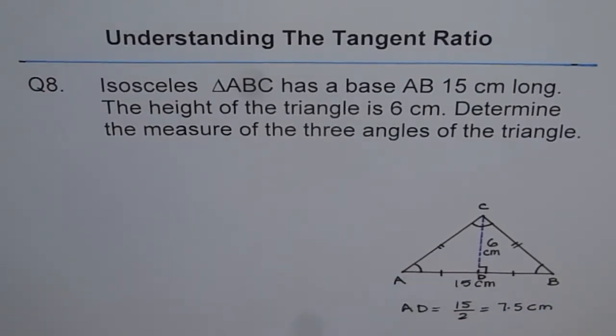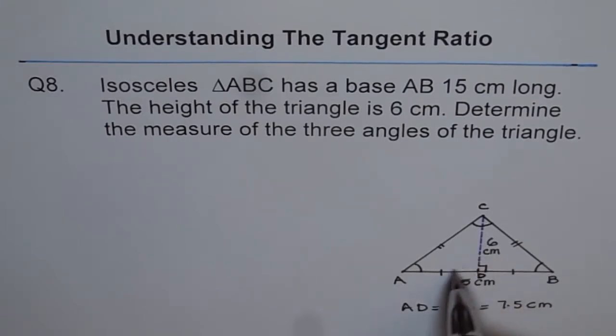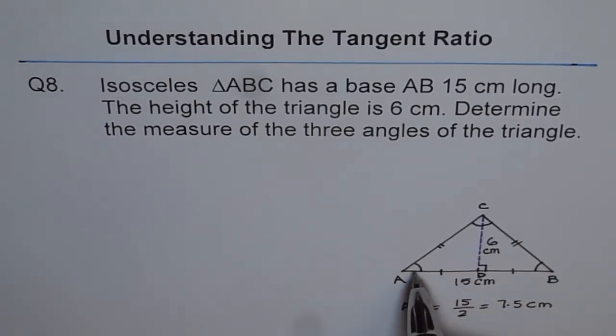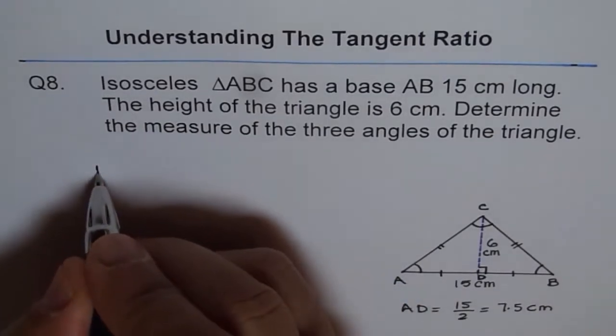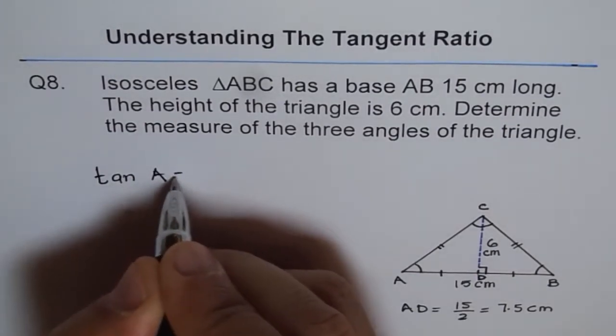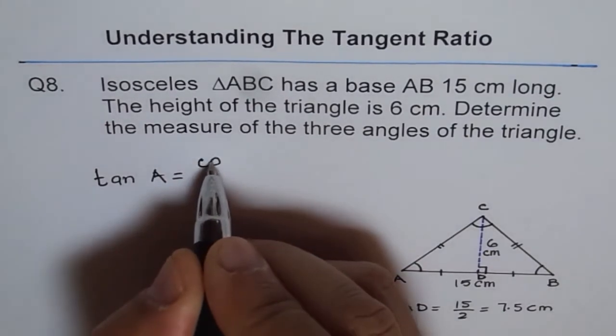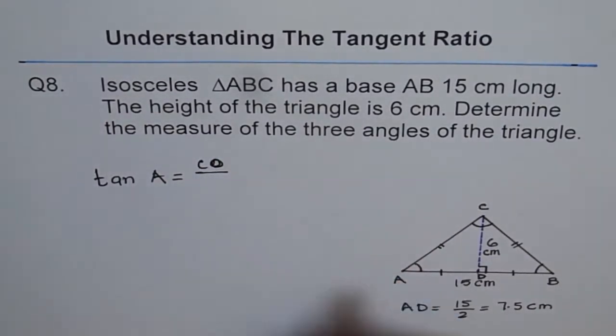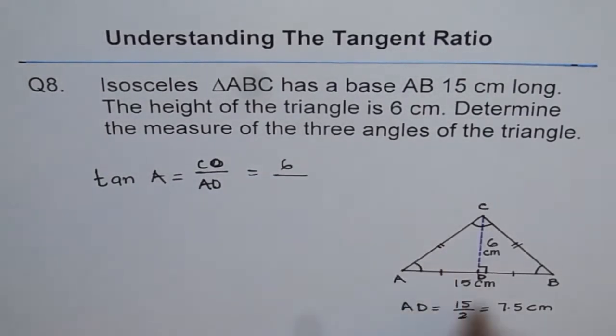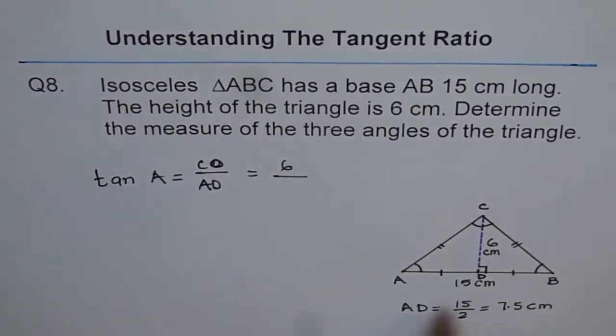Now, how will you find angle A? Well, we know perpendicular is 6 cm and AD is 7.5. Using these two sides, we can find angle A. It's an application of tangent ratio. So we say, tan A equals CD, the opposite side, over AD. Now, CD is 6 cm and AD is 7.5, half of AB.